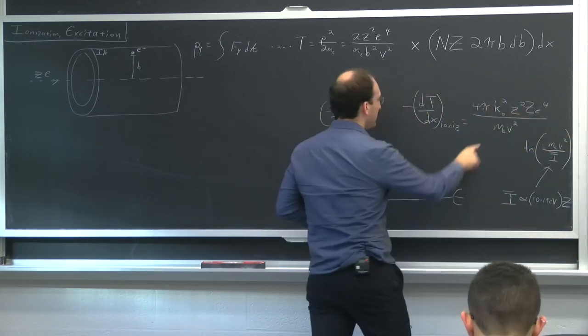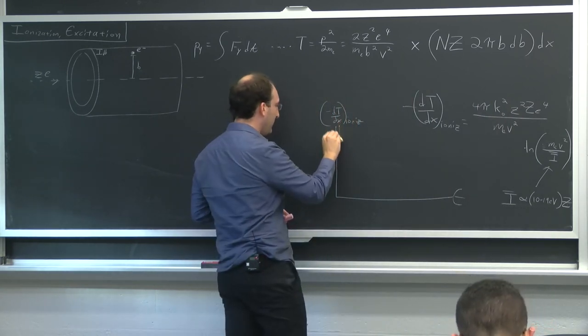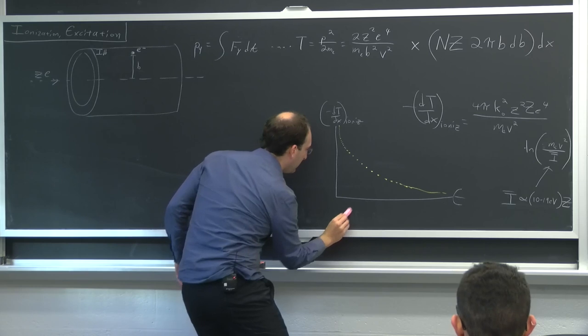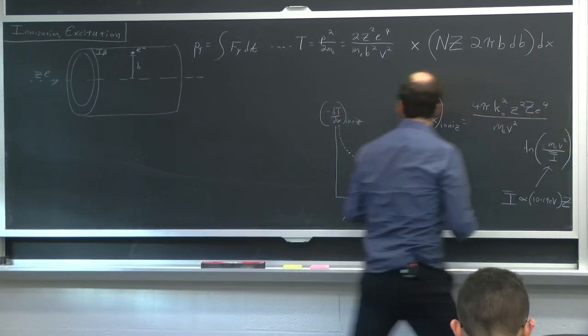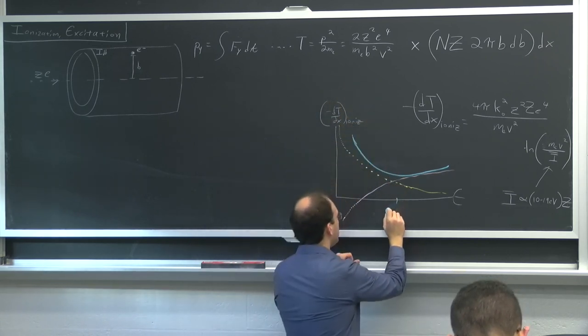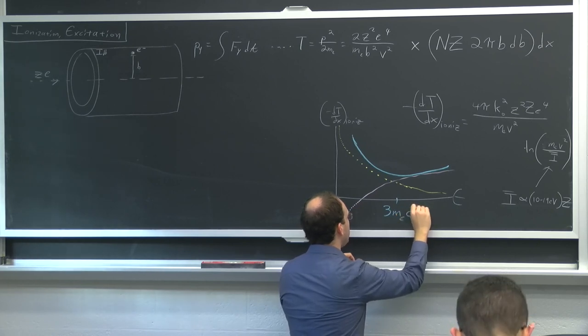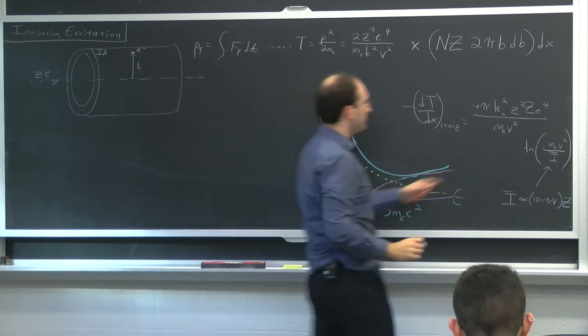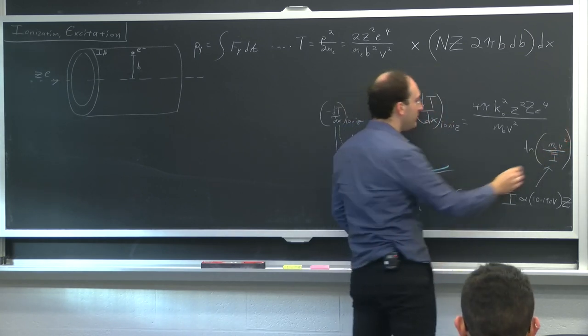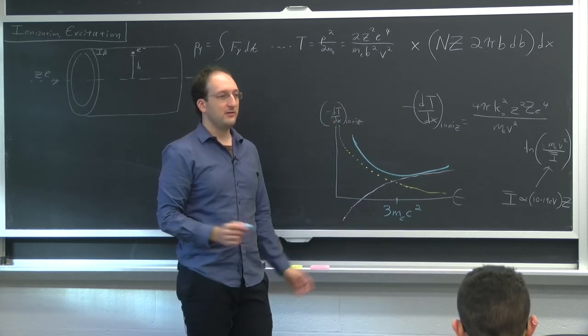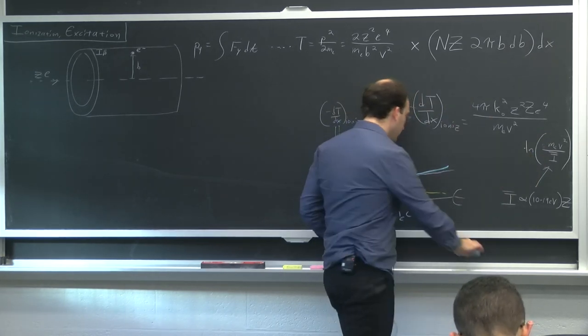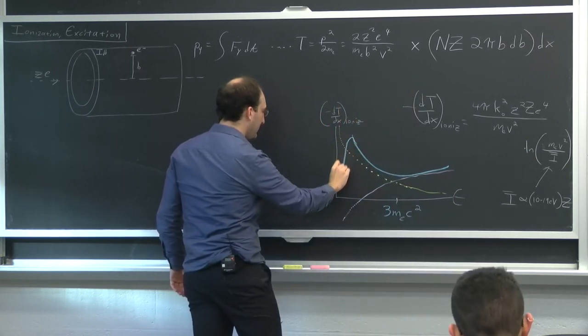Then we multiplied by the electron density in the material, which was the number density of atoms times z, the number of electrons per atom, times the area, the cross-sectional area of this hollow cylindrical shell, which came out to 2πb, which is the circumference of that circle right there, times dB dx. I'm just going to leave that there for now.